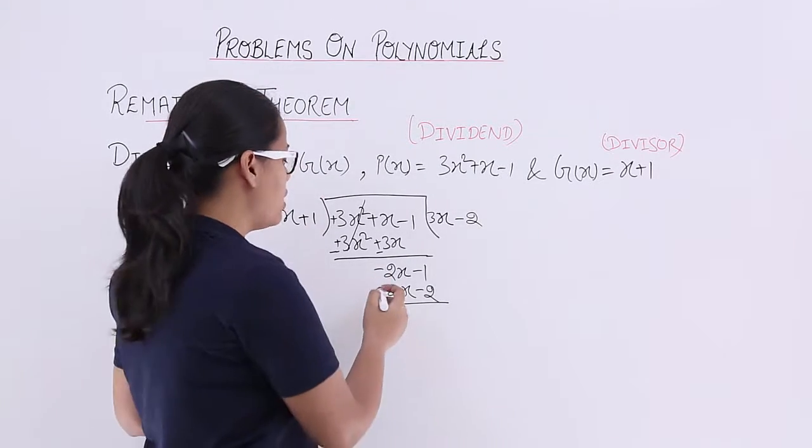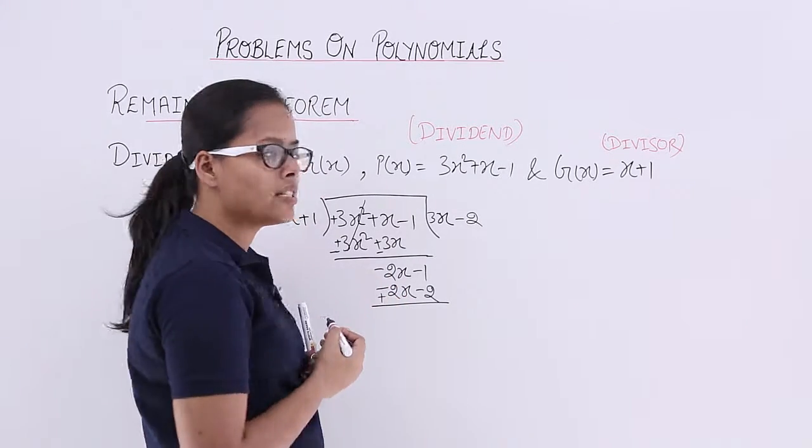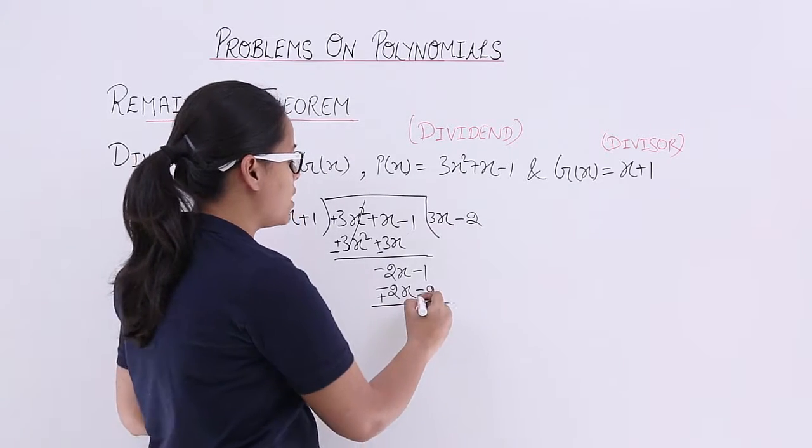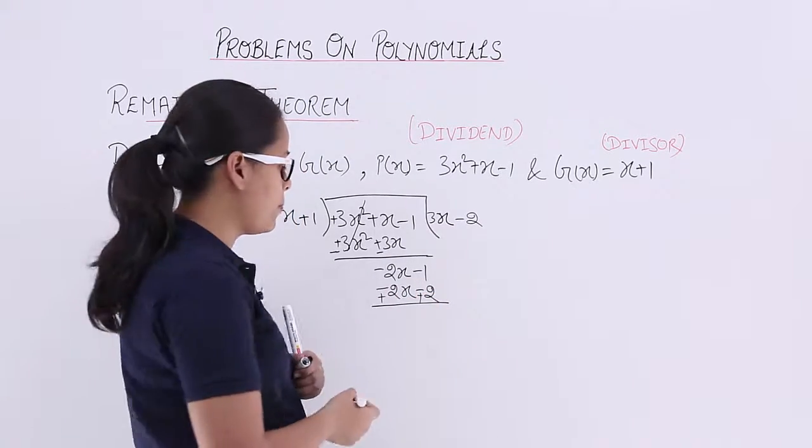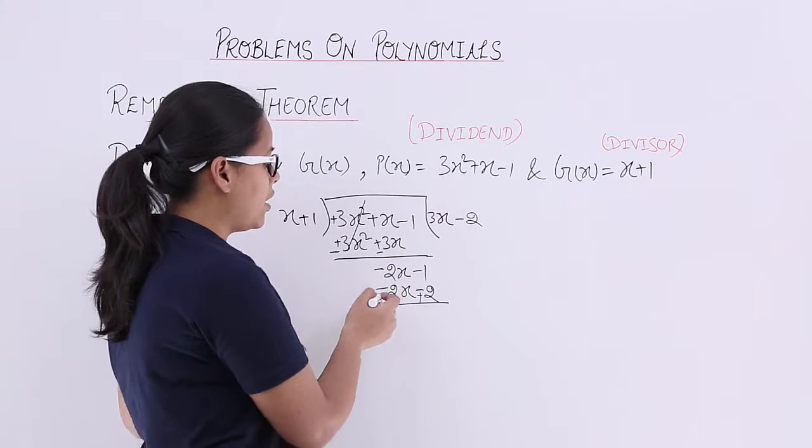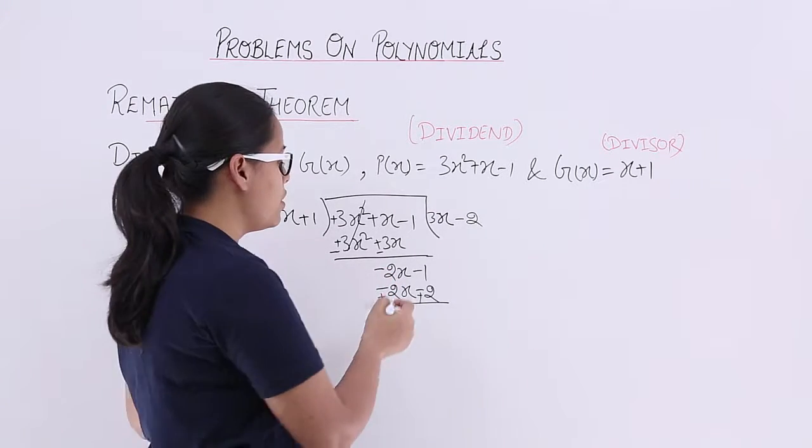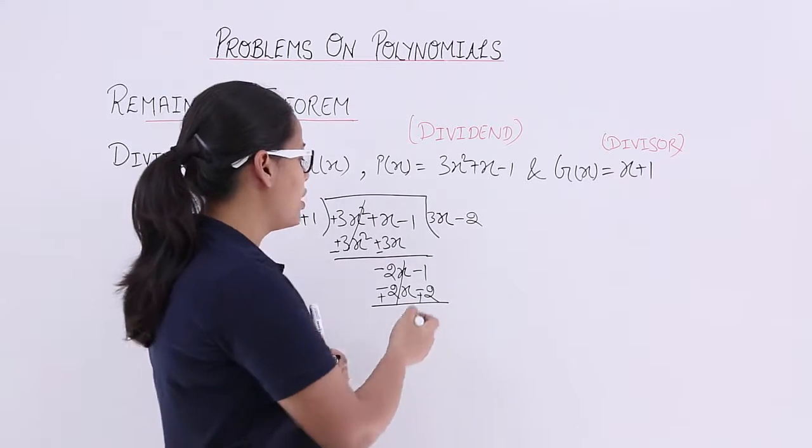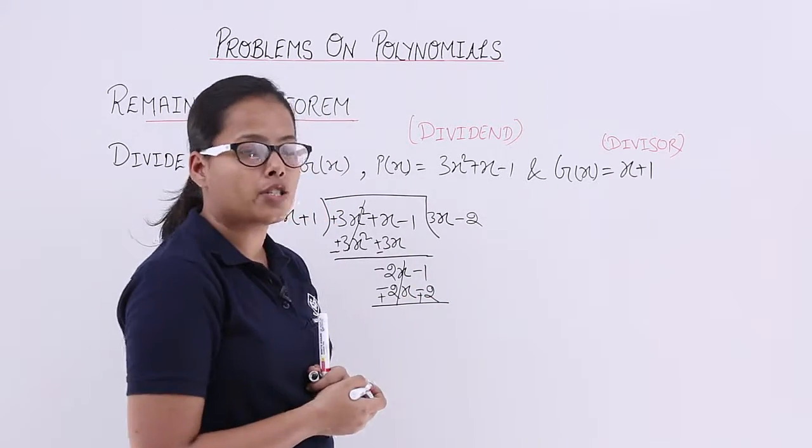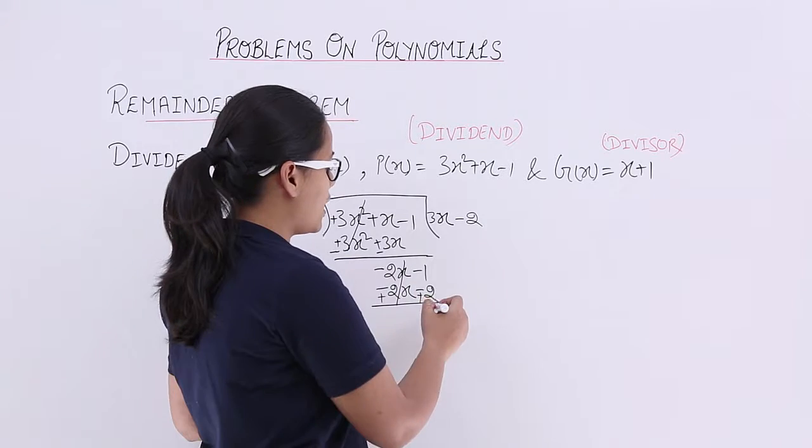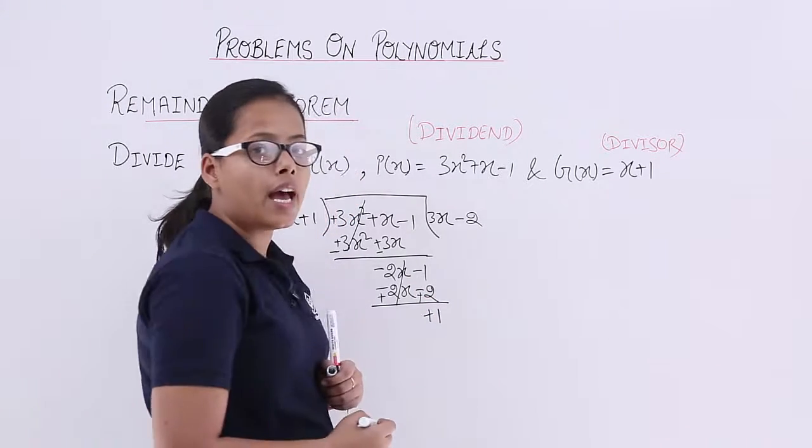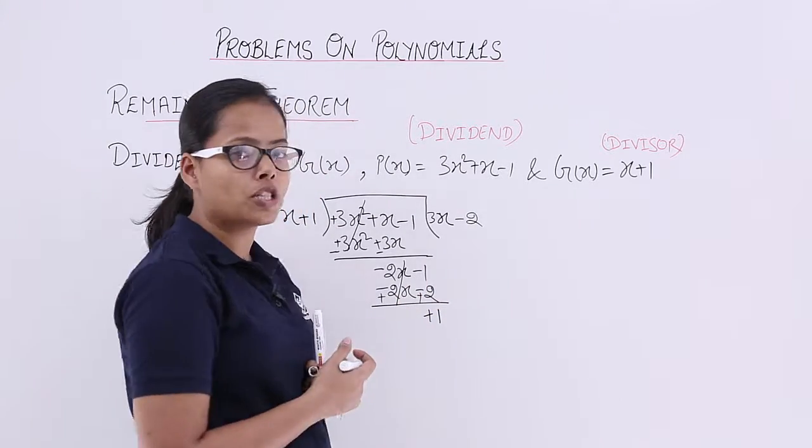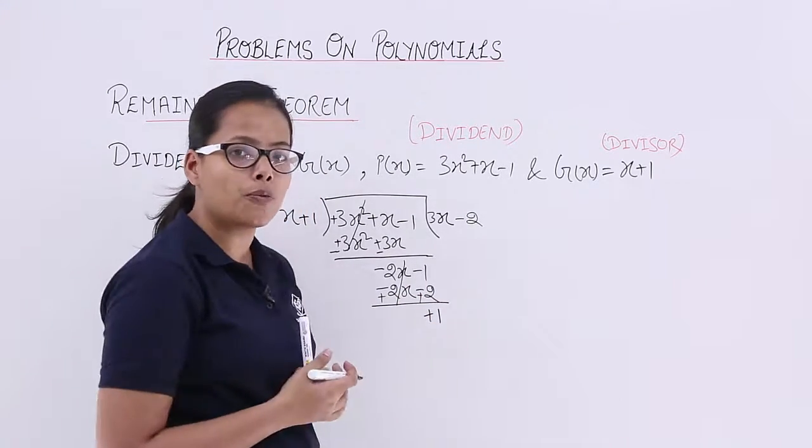Now you have to subtract this. You will change the sign of -2 into plus and change this minus sign into plus. As the sign here is negative and sign here is positive, these terms will get subtracted. -1 and +2, again these terms are getting subtracted and you will get positive 1. As 2 is greater than 1 and sign of 2 is positive, that's why you are getting positive 1.